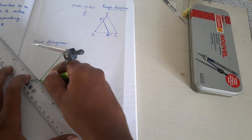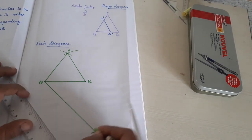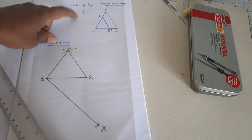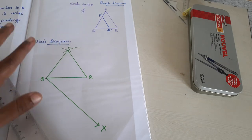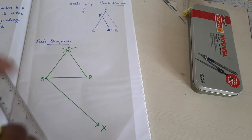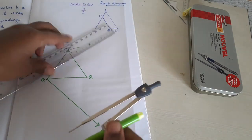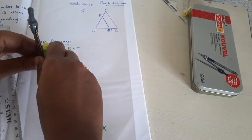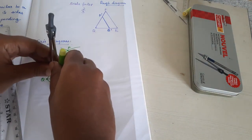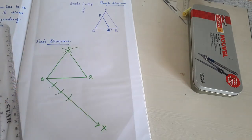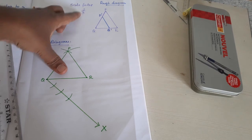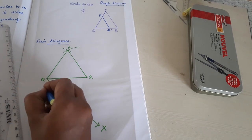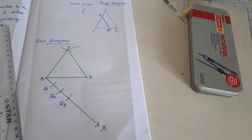Second step: reverse your protractor and take one acute angle. I am taking 45 degrees. Join and mark as Ray X. Third step: see the scale factor 2 by 3 — which is the biggest? 3 is the biggest. So draw 3 arcs from Q with approximately 1.5 cm each: first arc, second arc, third arc. Name them Q1, Q2, Q3.